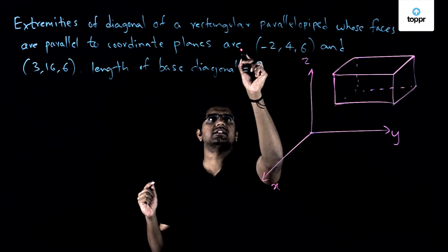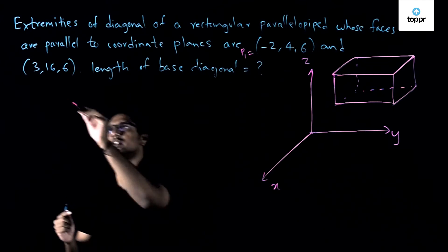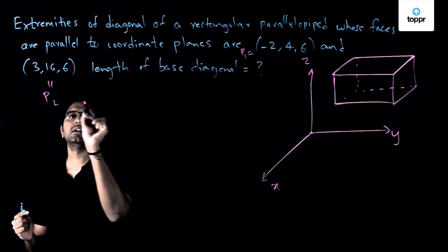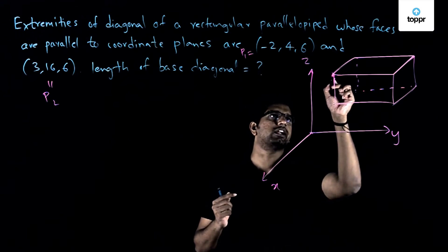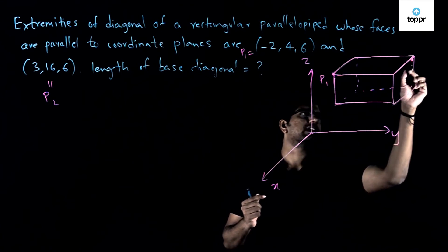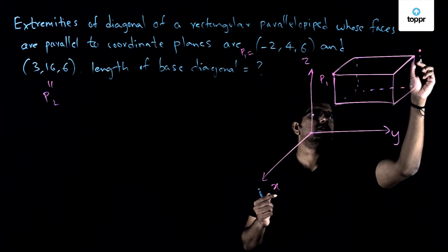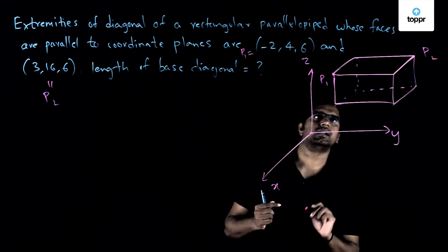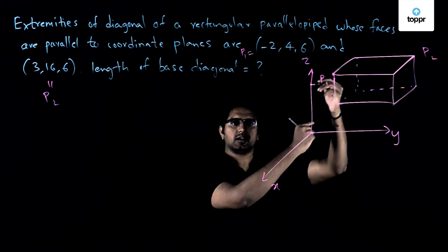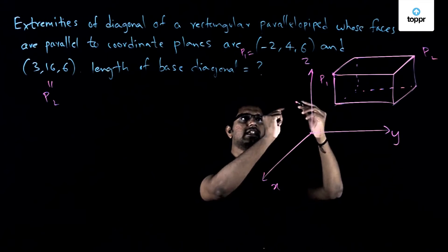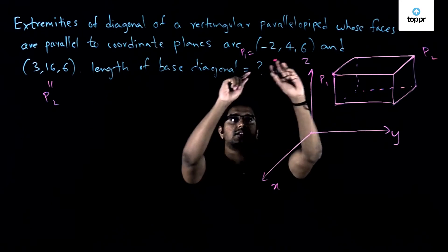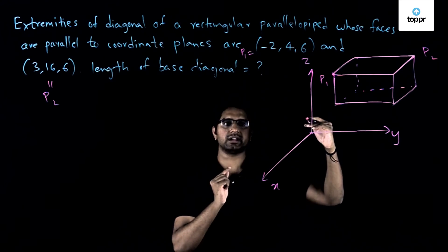So if I take this as P1 and this as P2, then I can consider this point to be P1 and this point to be P2.